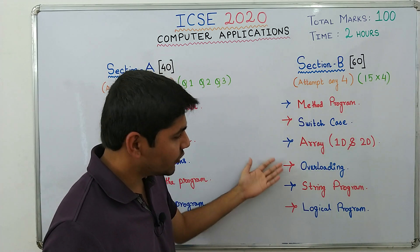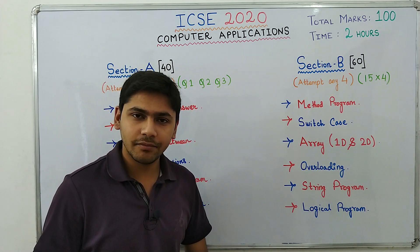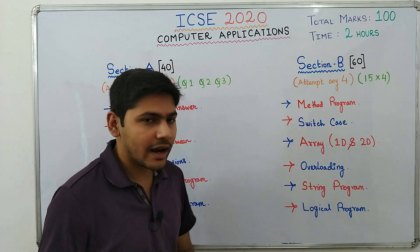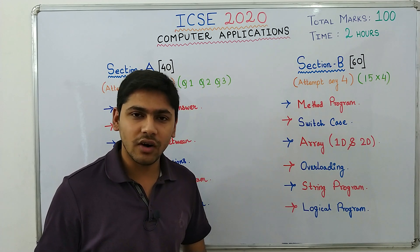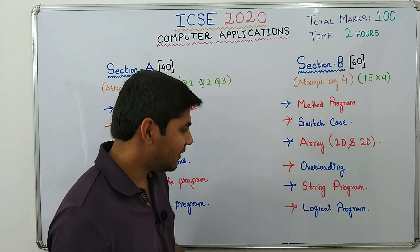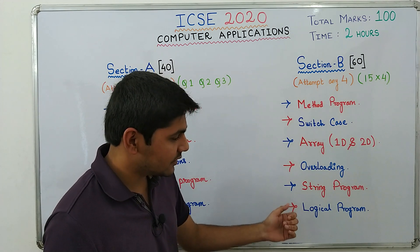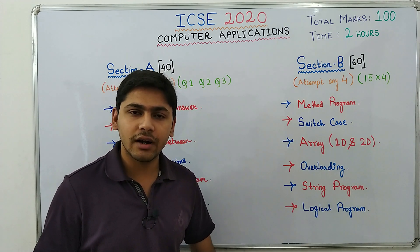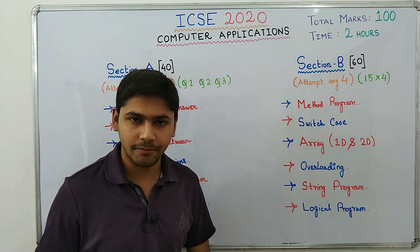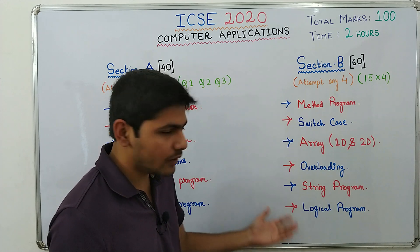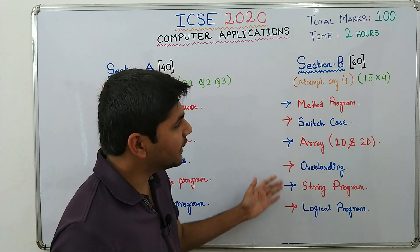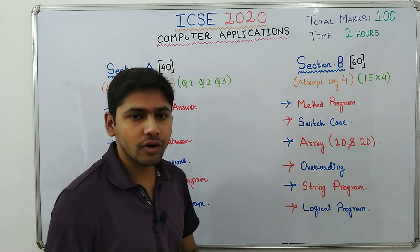Then you have overloading — you will get a question from function overloading. Then you will have string programs — programs relating to sentences, words, and all that. Then finally you will have logical programs — programs like Armstrong number, Neon number, Magic number, Krishnamurti number, where you will have to use your logic. You will have to attempt any four questions, meaning four programs.